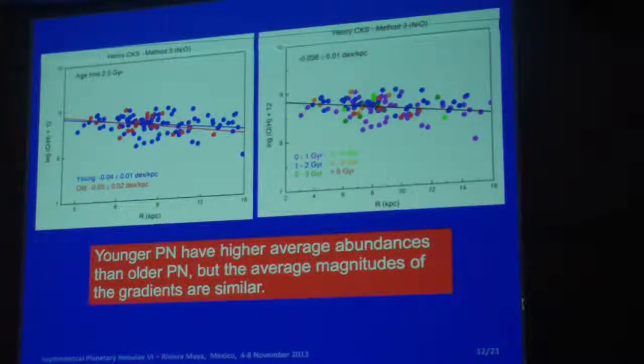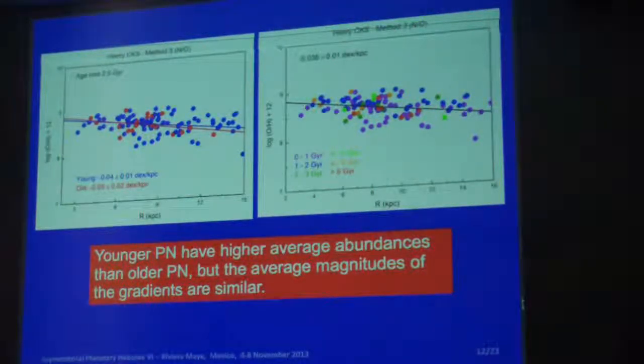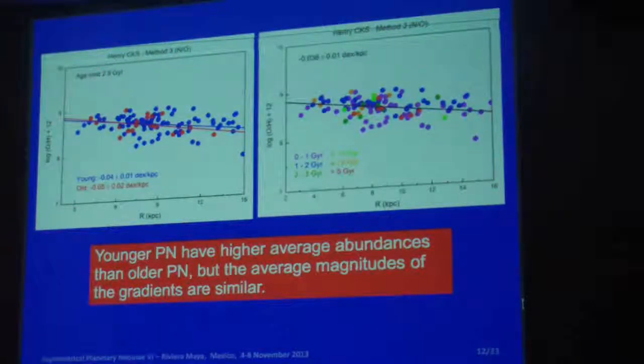We have two conclusions based on this work. The first conclusion is that according to the ages we have calculated, we don't see much of a difference between the gradients for young or old nebulae. The second conclusion is that the younger ones have higher average abundances than the older ones. That is a very good sign, because the younger have been formed in an oxygen-rich interstellar medium, so they should be more oxygen-rich, more neon-rich, more sulfur-rich. But the gradients are not very different according to these results.